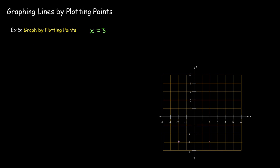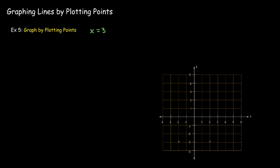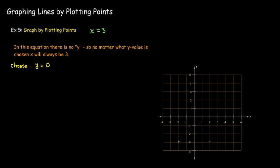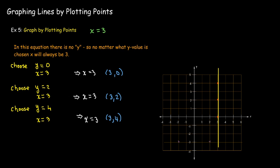In this example, there's no y, but we know x equals 3. So x is always 3, no matter what y value I choose. So I can choose y equals 0, and x will be 3. I can choose y equals 2, x will be 3. I can choose y equals 4, and x will be 3. So now I get a vertical line. Let's go ahead and draw that line and remember to put our arrowheads.